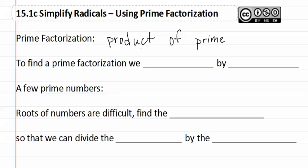Remember product means multiplication. To find a prime factorization, we divide by primes until we have all prime numbers.